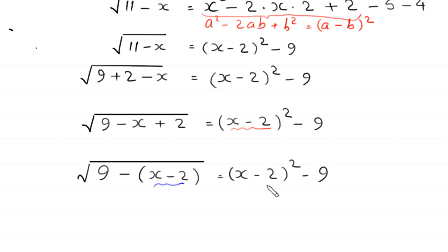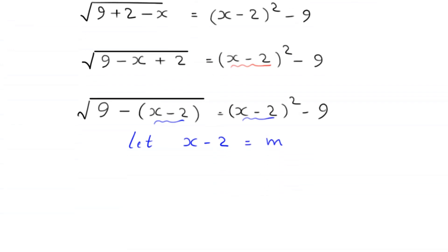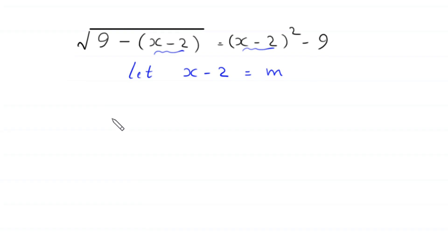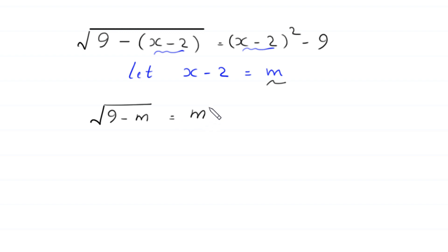Since we have (x minus 2) appearing on both sides, we let x minus 2 equal m. Replacing every occurrence of (x minus 2) with m, the equation becomes the square root of (9 minus m) equals m squared minus 9.